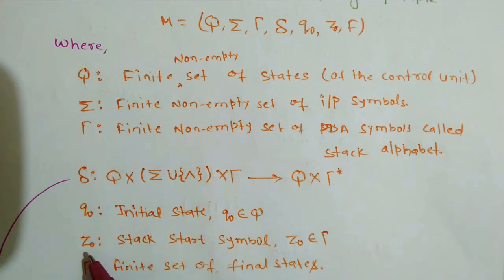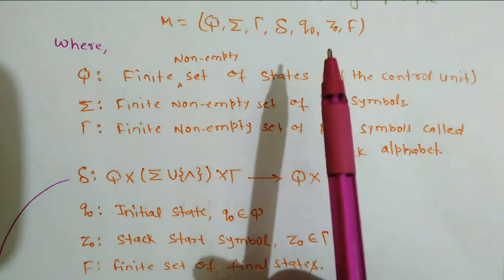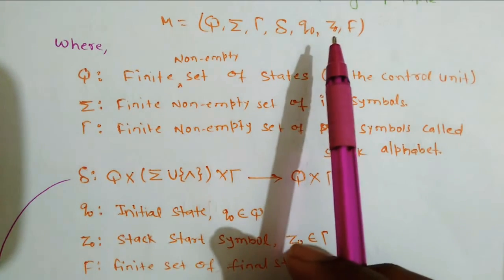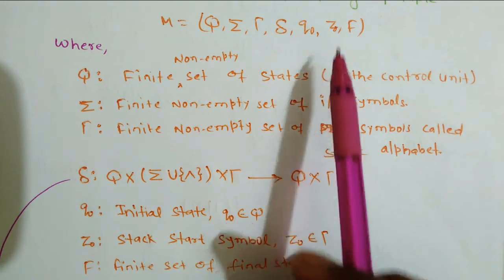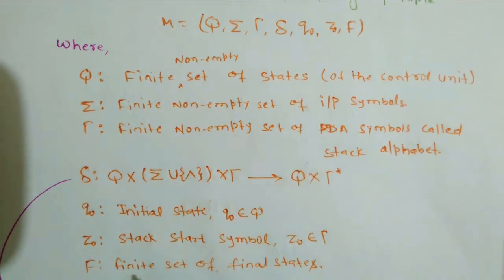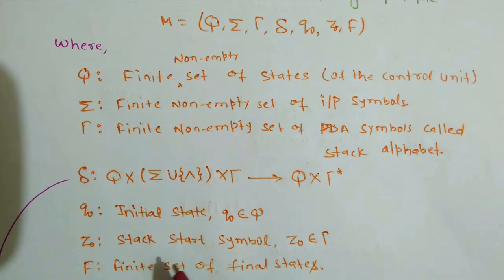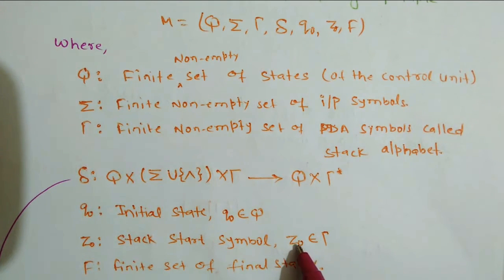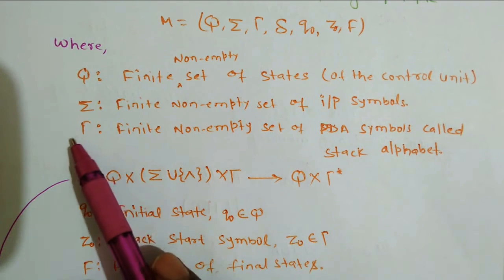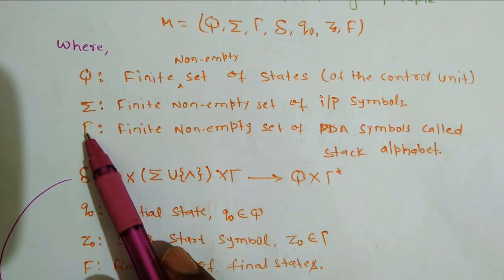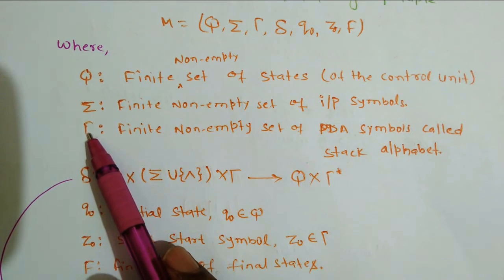Z-naught is another symbol — an extra tuple compared to finite state machines. Z-naught is a start symbol and it is an element of tau, the stack alphabet.